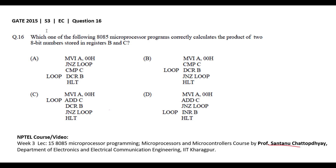This question is from GATE 2015 Session 3 EC paper. The question asks which one of the following 8085 microprocessor programs correctly calculates the product of two 8-bit numbers stored in registers B and C. Reference material can be found in an NPTEL course by Professor Santanu Chattopadhyaya, Department of Electronics and Electrical Communication Engineering, IIT Kharagpur. We need to find out which option evaluates the product of B and C.